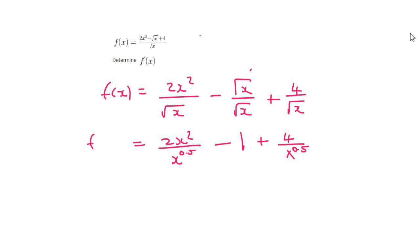Now when taking the first derivative you would want the x's at the top. And so for this one, if we minus our exponents, we should end up with 2x to the 1.5 minus 1 plus 4x to the negative 0.5.